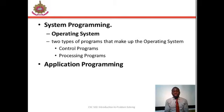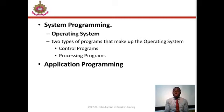There are two types of programs that make up the operating system. One, control programs, and two, processing programs. Under control programs, the operating system control programs generally oversee the system operations and carry out tasks such as input and output, scheduling, communicating with the computer user or programmer, and handling what is known as interrupts. An interrupt is just a signal that is sent to the CPU indicating that an event has just occurred.